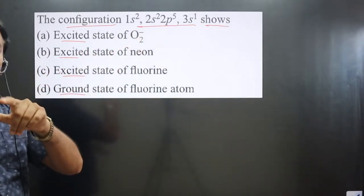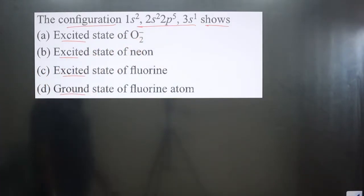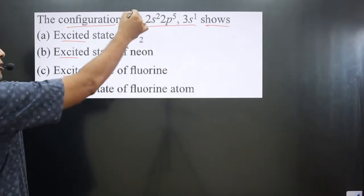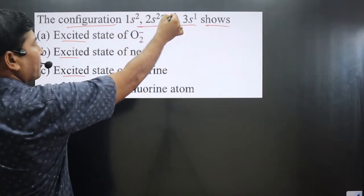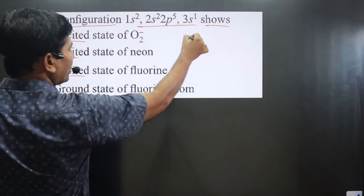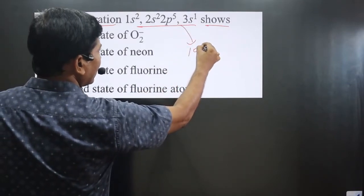We can calculate the total number of electrons: 2 plus 2 is 4, plus 5 is 9, plus 1 equals 10. So we have 10 electrons total.